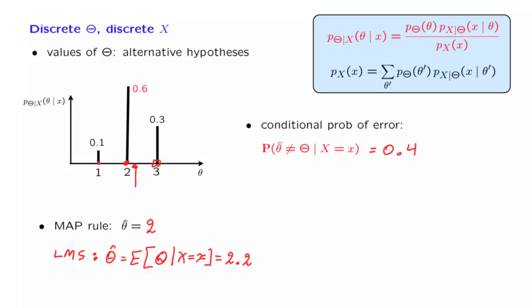And if we want to keep the probability of error small, we want to keep the sum of the probabilities of the other values small, which means we want to pick an estimate for which its own probability is large. And so by that argument, we see that the way to achieve the smallest possible probability of error is to employ the MAP rule. And this is a very important property of the MAP rule.